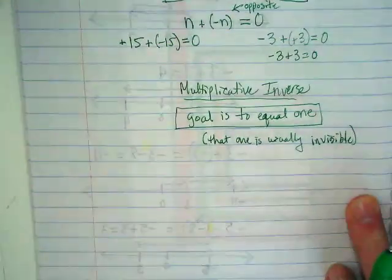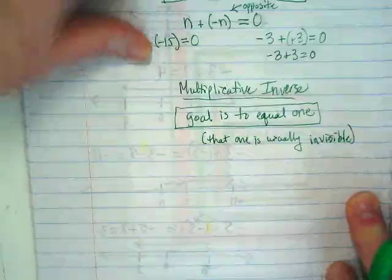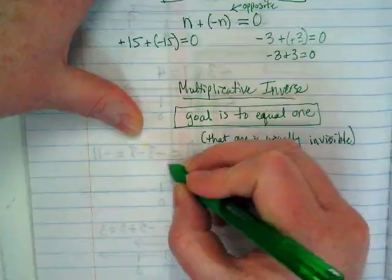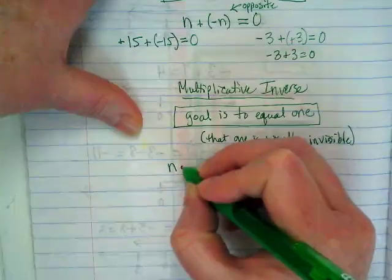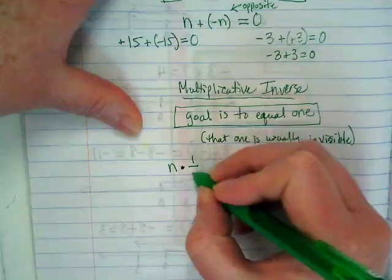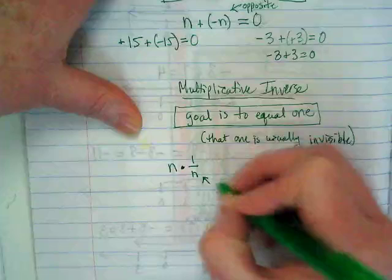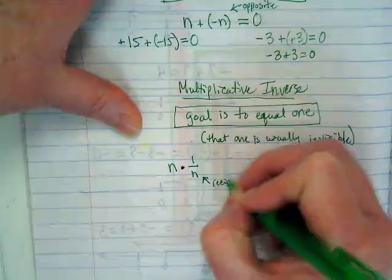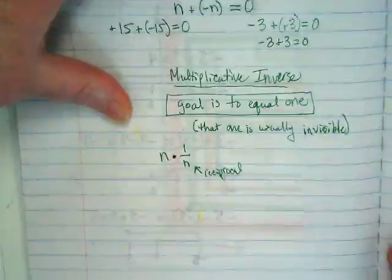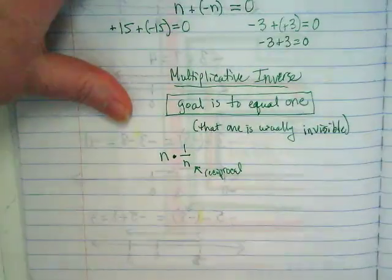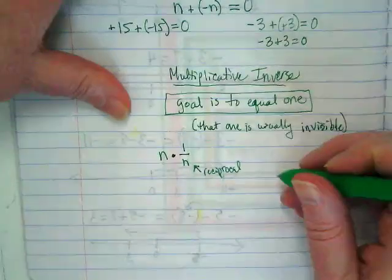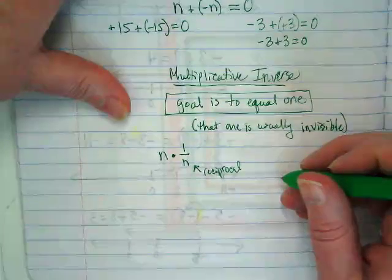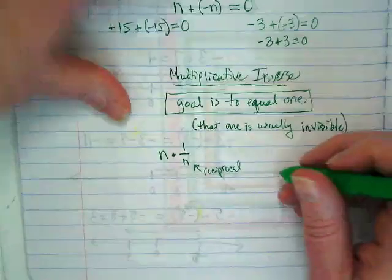let's do an algebraic version. Again, we're going to use the variable n to stand for any number. So if I have a number n, I would multiply by that n, its reciprocal. What is reciprocal? What is reciprocal? I'm going to show you that with this example, and hopefully that will answer it. If not, ask me again.